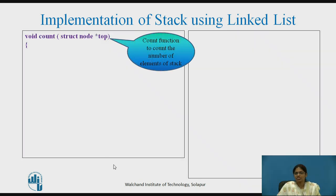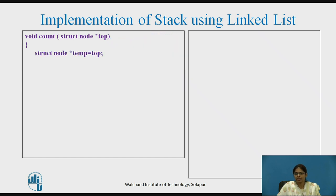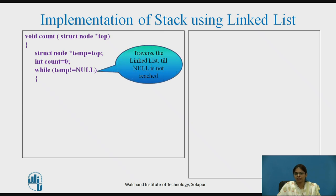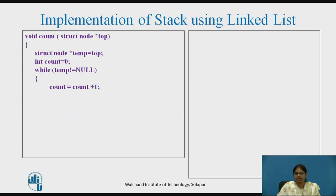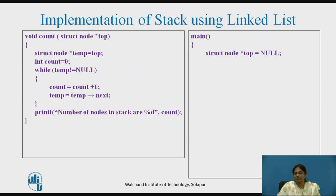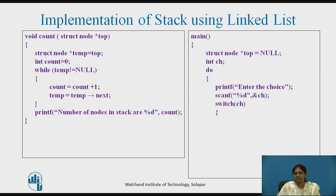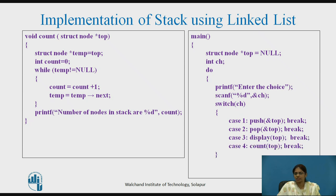The count function counts the number of elements in the stack. A temporary pointer is initialized to top and a count variable is initialized to zero. Using a while loop, we traverse the linked list till null is reached — with each iteration, count is incremented by one and temp is moved to the next node. In the main module, the top of the stack is initialized to null, and an integer variable ch takes the user's choice. In a do-while loop, continuous choices are taken from the user, and in a switch case, one of the cases is executed: case 1 for push, case 2 for pop, case 3 for display, and case 4 for count. This loop continues until ch equals 5. This was the implementation of stack using linked list.